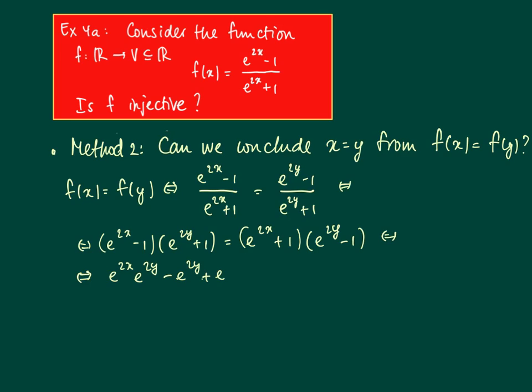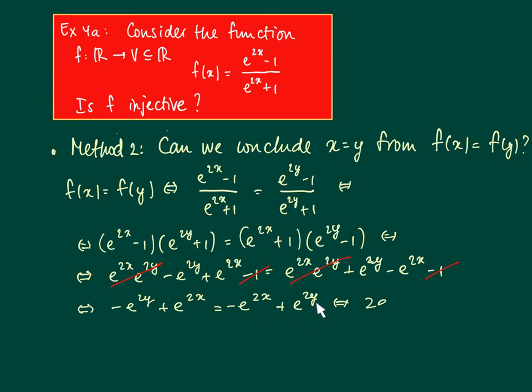Which is, if we work out the brackets, then we get e to the power 2x times e to the power 2y minus e to the power 2y plus e to the power 2x minus 1, and here we get the same thing. By working this out we see that numerous terms cancel on the left and the right. Minus 1 is here, minus 1 is there. So the remaining part is what we see here: minus e to the power 2y plus e to the power 2x equals minus e to the power 2x plus e to the power 2y.